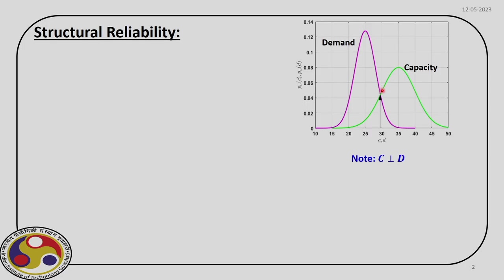The moment we consider uncertainty, the capacity can take any value defined by the green line, while the demand can take any value defined by the pink line. Under this situation, we have a scenario where the demand can be more than capacity, which leads to failure. That is what is marked by the vertical arrow — the capacity on the left-hand side governed by the green line is less than the demand on the right-hand side of this vertical arrow.